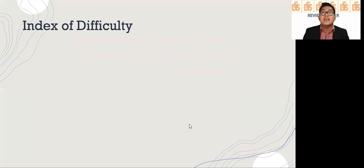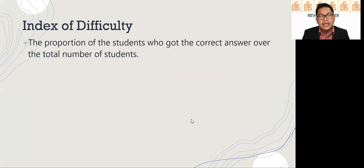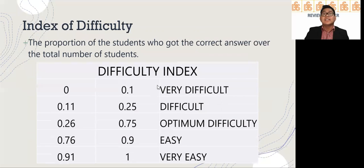Now, let's start with index of difficulty or difficulty index. Again, the proportion of the students who got the correct answer over the total number of students. And this is the range for difficulty index: if the percentage is from 0 to 0.1, that means it's very difficult. From 0.11 to 0.25 is considered difficult. From 0.26 to 0.75 is optimum difficulty, or we simply consider that as average. 0.76 to 0.9 is easy. And 0.91 to 1 is very easy.